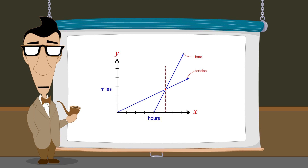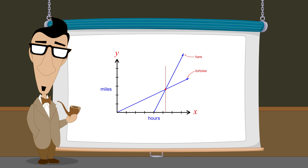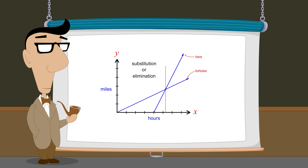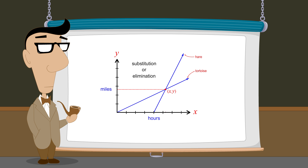We showed how this system of linear equations could be solved either by using the substitution method or the elimination method. Solving the system of equations gives us the coordinates of the intersection point, and thus the distance and time when the tortoise and hare are both at the same place at the same time.